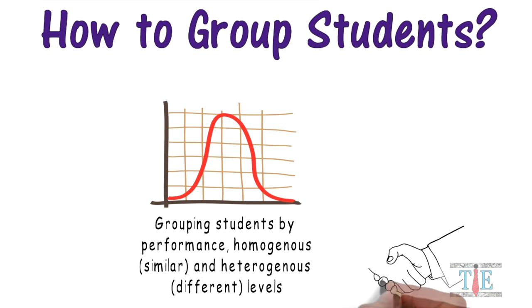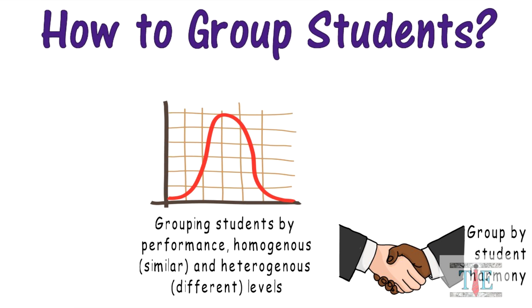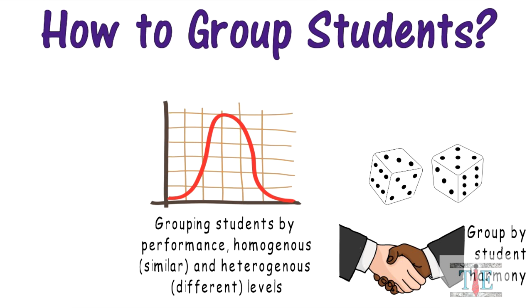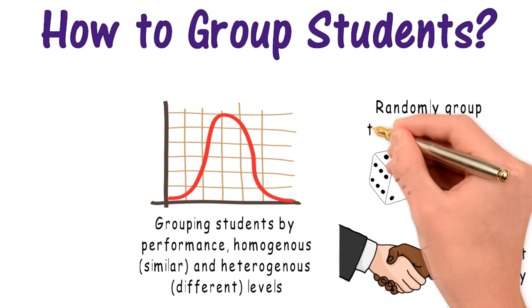Student safety is always the number one priority. Avoid bullying situations. Therefore, consider grouping students for harmonious and safe environments. Another possibility for grouping is a random approach. In that case, there is no particular rhyme or reason for placing any one student in a group as opposed to placing them in another group.